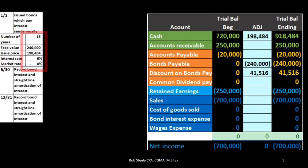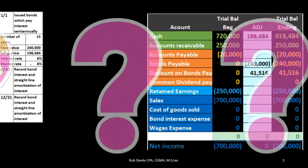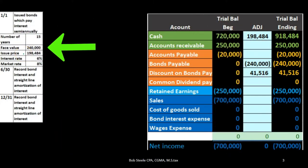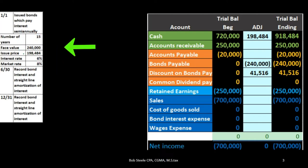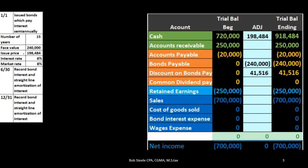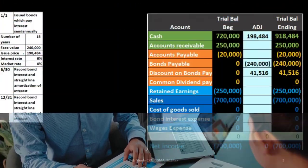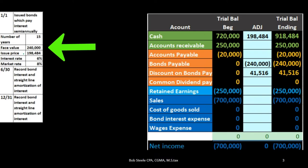Therefore we have to do something else. The things that are fixed on the bonds are the face amount and the interest rate. What we can change is the amount we're going to receive for the bonds. In this case, the bonds have a face amount of $240,000 — meaning when we issue them we're going to have to pay back $240,000 at the end. Normally we would receive $240,000 up front, then pay some form of interest.